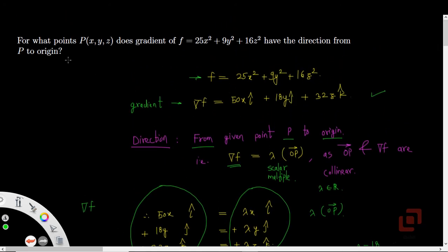So answering the original question, for what points P does the gradient have the direction from P to origin: points lying on the coordinate axes.